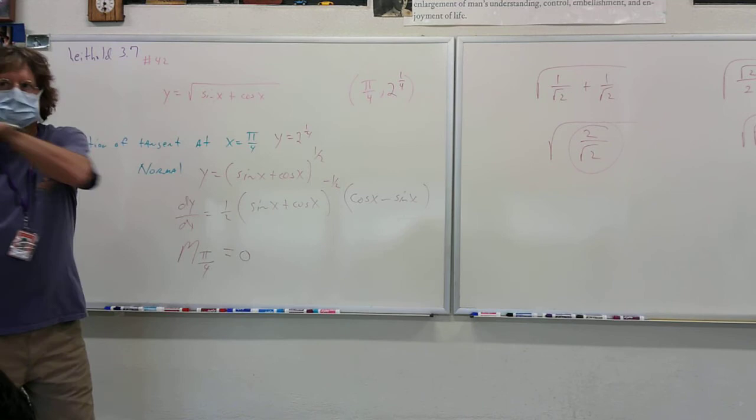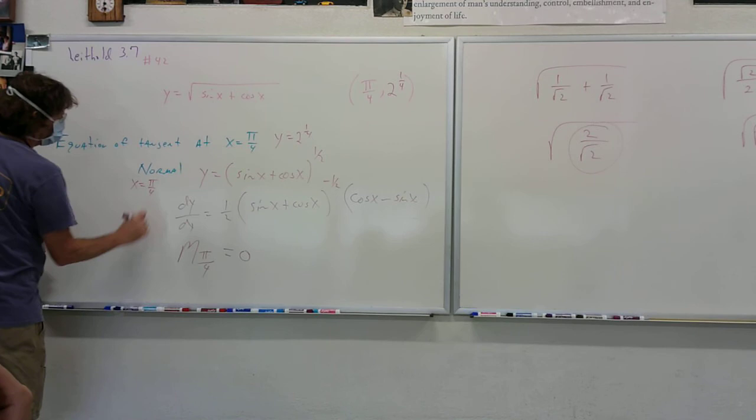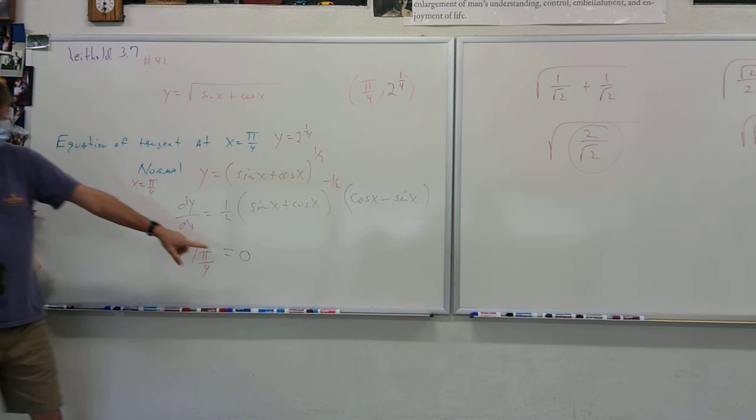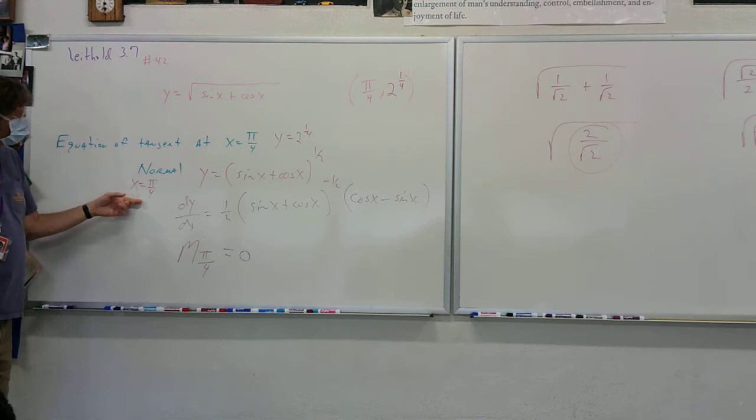Y equals 2 to the 1/4 is your tangent line because it's a horizontal line. And then the normal line is a vertical line — so it's x equals pi over 4. And there's your normal. The slope is zero, so if you have a zero slope, you have a horizontal line touching that y value. Your normal is a vertical line, and it touches at x equals pi over 4.